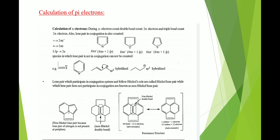Consider pyrrole: it contains four pi electrons plus nitrogen having a lone pair of electrons, so four plus two equals six pi electrons — it is aromatic. Furan has four pi electrons plus one lone pair on oxygen, giving six pi electrons total. Thiophene has four pi electrons and one lone pair, also giving six pi electrons. Hence all three are classified as aromatic compounds.